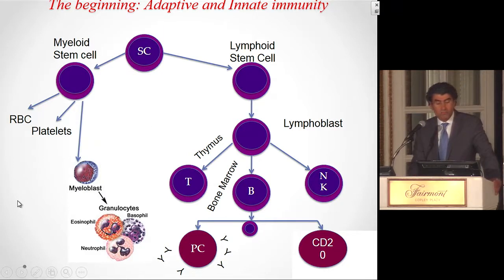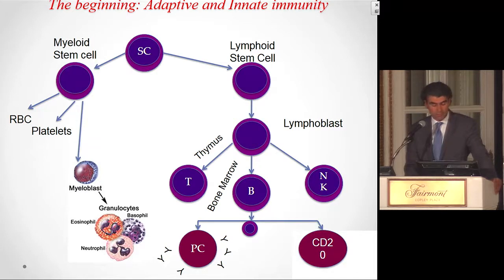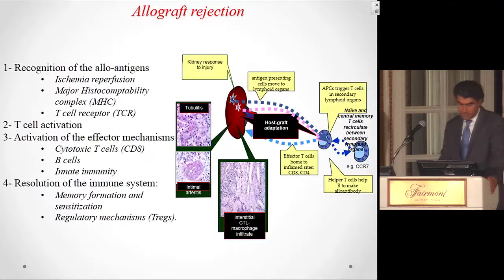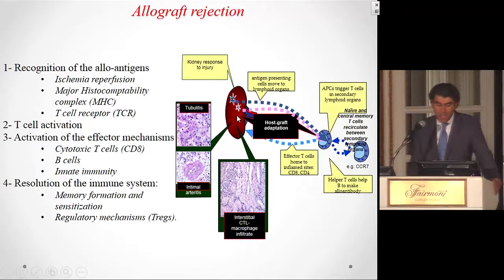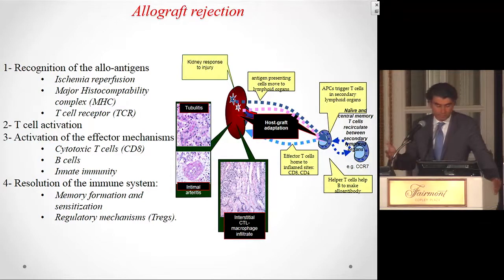The innate immunity is a nonspecific system that reacts to stress — which doesn't have to be an infection or antigen. You can have trauma and swelling because innate immunity reacted to that stress. When T cells get activated, they secrete cytokines that call and activate the innate immunity. Today we will cover how the immune system recognizes allo-antigens on the kidney, how T cells get activated, and how rejection occurs — which explains the mechanisms of all the medications we use.